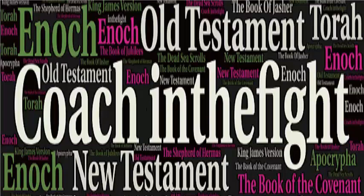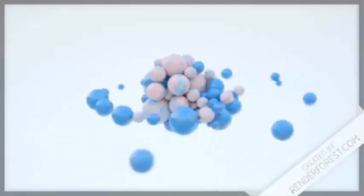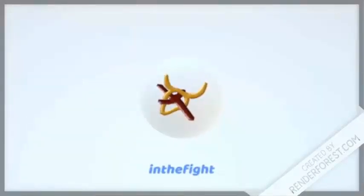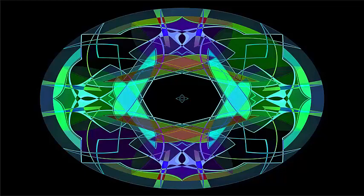I wanted to do this video because there is a discrepancy between the Enoch calendar and the Jewish calendar for the year 2021. Because those calendars don't match up for 2021, you have a lot of conversation around calendars. Some are coming real close to the actual Enoch calendar, but others are using this state of chaos to create their own calendars.